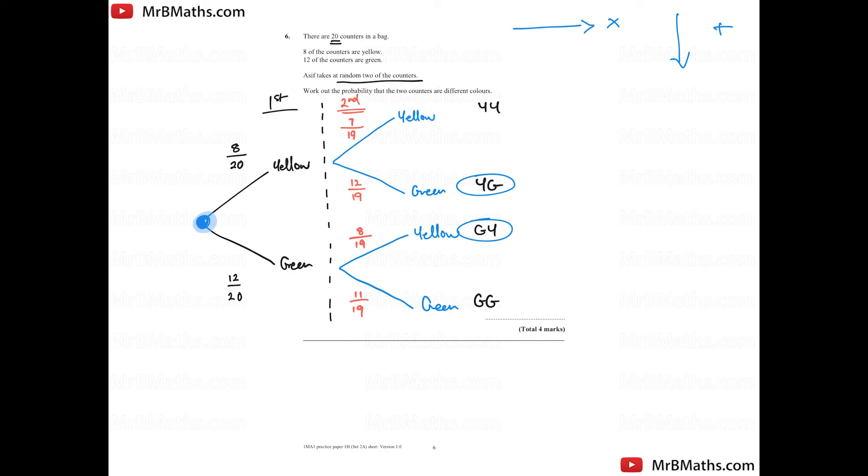So if we go for YG, we'll have 8 over 20 times 12 over 19. And for green and yellow, we'll have 12 over 20 times 8 over 19. So if we work out what that is, I'm going to use a calculator just to speed things up. So if we get 96 over 380, so we've got our two probabilities, now we need to go down and add them. So 96 plus 96 will give us 192 over 380.